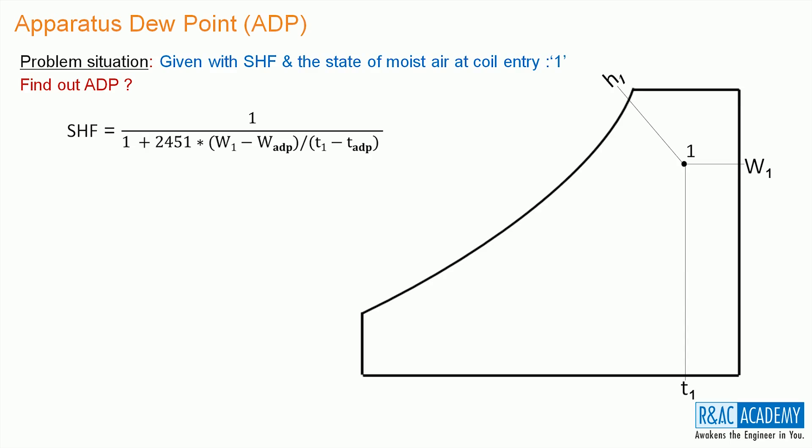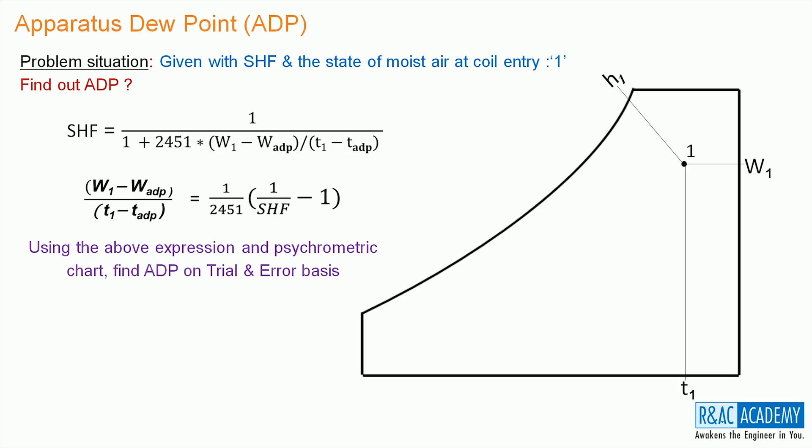We have the expression for SHF which can be rearranged. We know T1, W1 and SHF in this expression. Using the above expression and the psychrometric chart, we can find the ADP on trial and error basis or using iterative method. Assume a temperature T and collect the corresponding W value from the chart. Then, substitute the T and W values in this expression against TADP and WADP values respectively. Check whether the LHS and RHS values are equal.